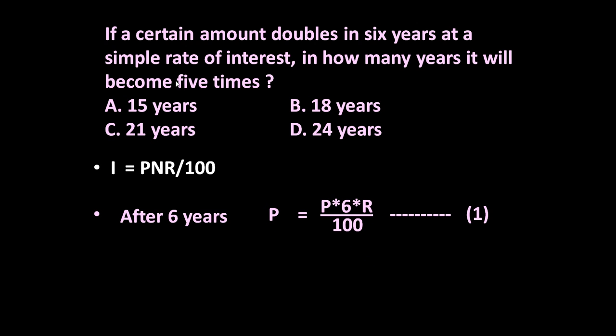Now in how many years it will become 5 times? Let us assume after N years it becomes 5 times. N is the number of years after which the amount becomes 5 times. Again let us use the same formula.